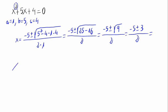And from here we obtain two solutions because we have plus or minus. One of them with plus and the other one with minus. With plus we have minus 5 plus 3 divided by 2, and minus 5 minus 3 divided by 2.